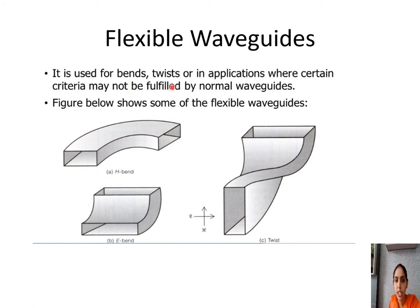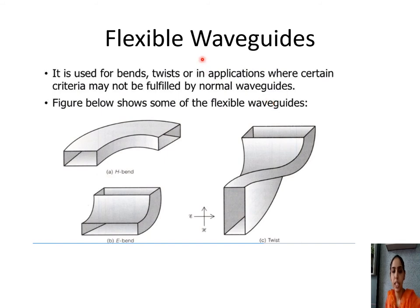These bends or twists are used in applications where certain criteria may not be fulfilled by normal waveguides. Other types of flexible waveguides include corners, bends, and twists.